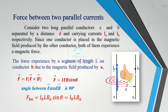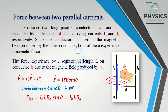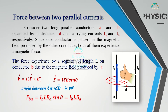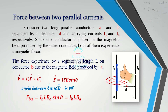So the equation becomes FBA, where FBA means the force experienced on B due to A — B is the body on which the force acts, A is the source. The force experienced on B due to A is equal to Ib × L × BA.